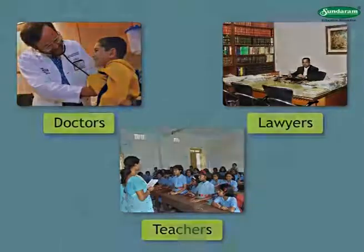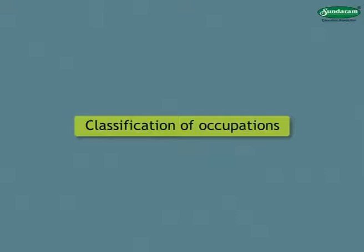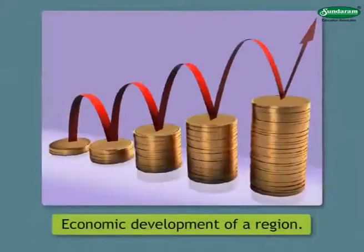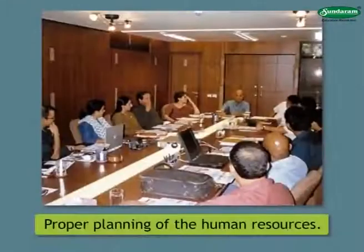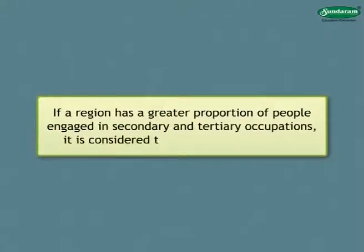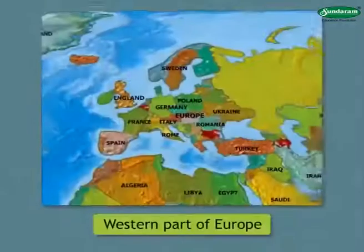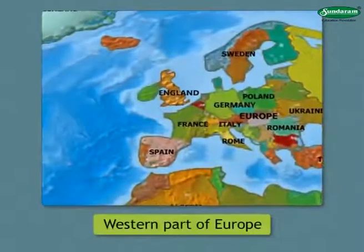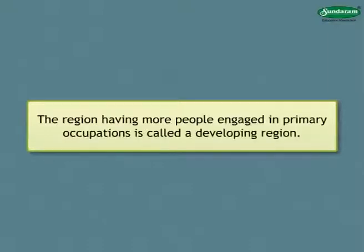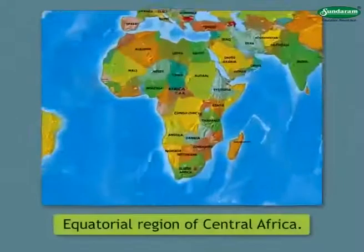Now that we have seen the classification of occupations, let us see the importance of each of these categories. The classification of occupations helps to ascertain the level of economic development of a region and to make proper planning of human resources for development. If a region has a greater proportion of people engaged in secondary and tertiary occupations, it is considered to be a developed region — for example, the western part of Europe. As against this, the region having more people engaged in primary occupations is called a developing region — for example, the equatorial region of central Africa.